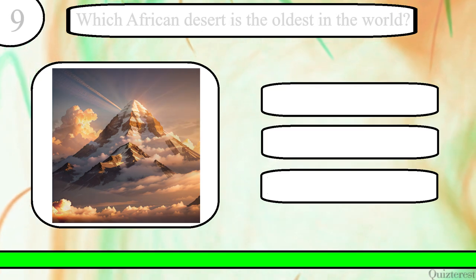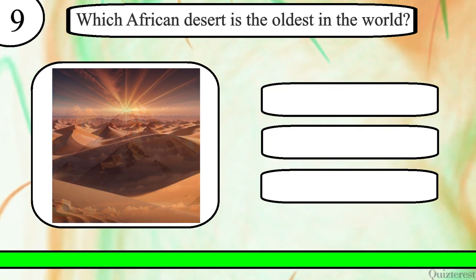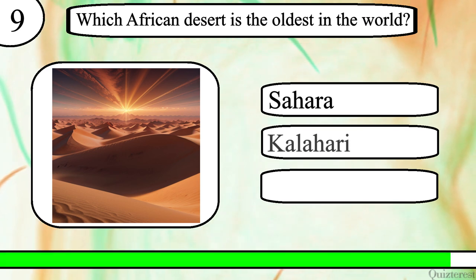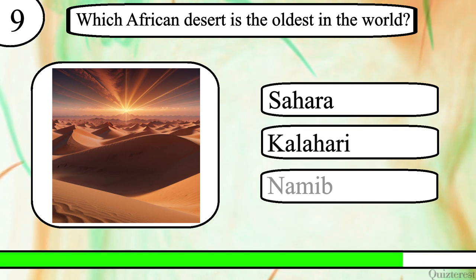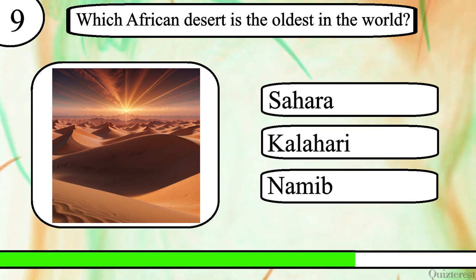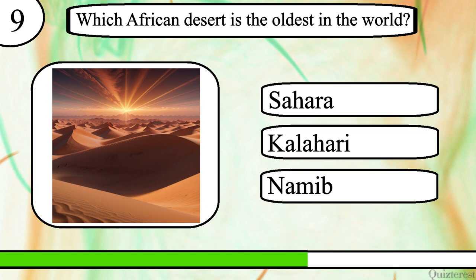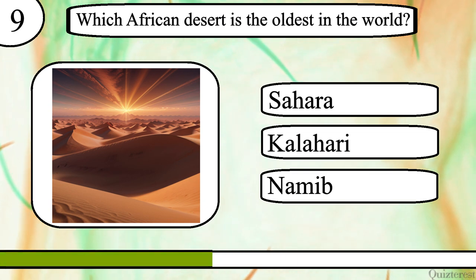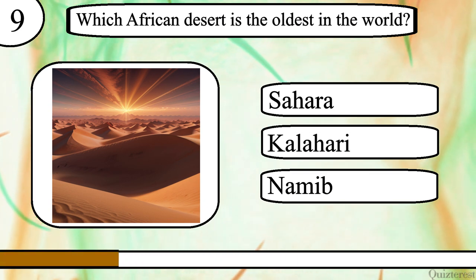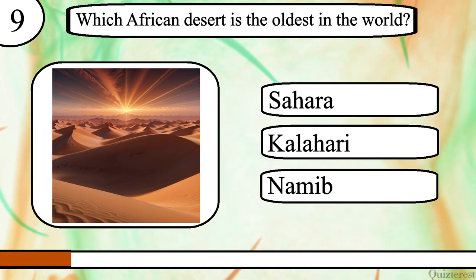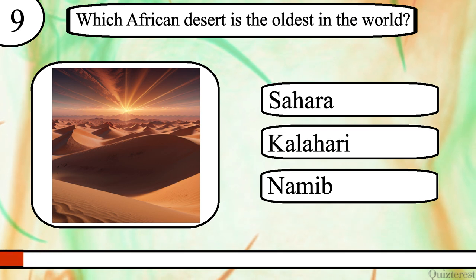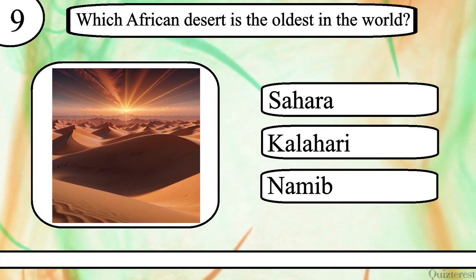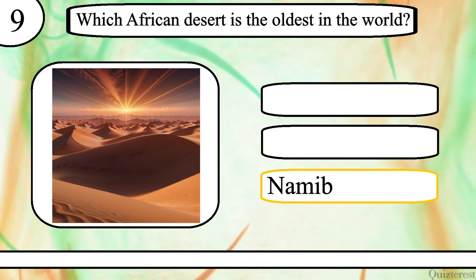Question 9. Which African desert is the oldest in the world? Sahara, Kalahari or Namib? The correct answer is Namib.